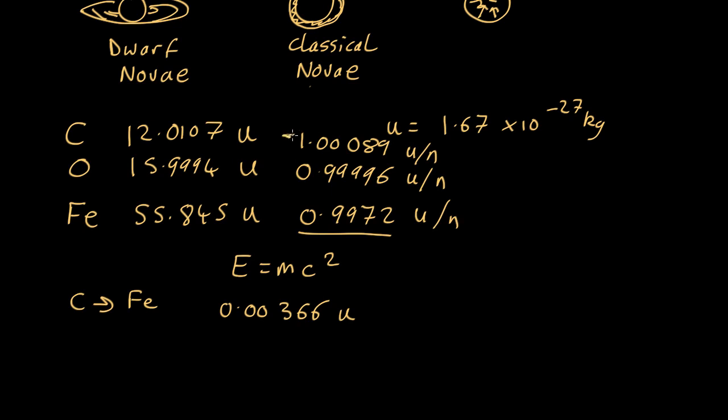The change in the mass is 0.00366 atomic mass units. That's just the difference between this and that. So, every time we take one nucleon of carbon, and somehow combine it so it's part of a nucleon inside iron, it weighs a little bit less. And that tells us that energy must be released.